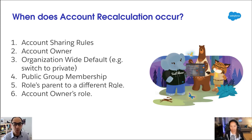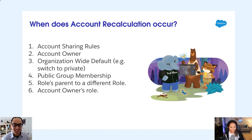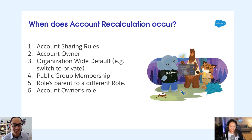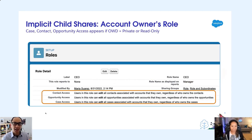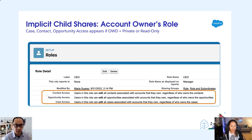We're focused on what we call child implicit. So as an administrator, you've already configured your roles. This is an example: if your organization-wide default is set to private, then your contact access, your opportunity access, your case access — all of that is adjustable from the role.